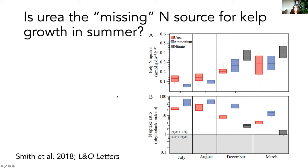This is Jason Smith's work looking at whether kelp was even capable of taking up urea and using it to fuel primary production — and the answer is yes. This shows the uptake of different nitrogen forms by kelp, and he found that kelp can take up urea. In this plot, when phytoplankton are taking up more than kelp, the box appears higher, and when kelp uptake is similar to phytoplankton, the box is closer to the line. At some times of year, kelp are taking up as much nitrate as phytoplankton.